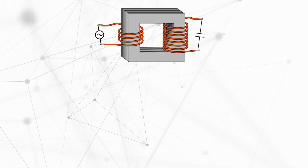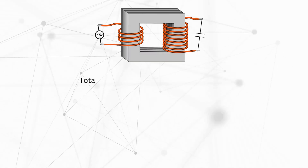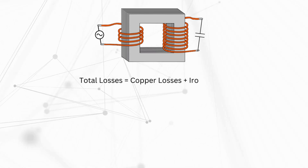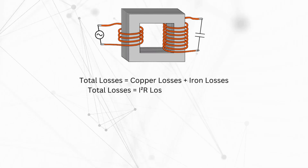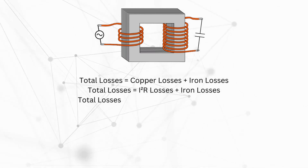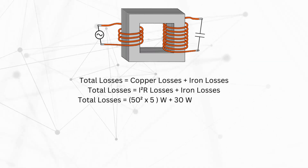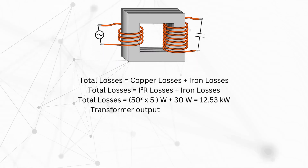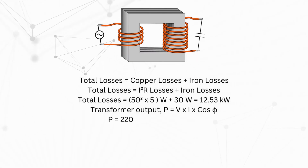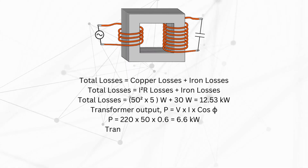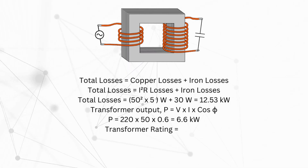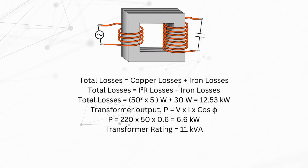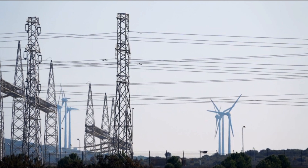In the second scenario, connect a capacitive or inductive load to the secondary of the transformer at power factor cos φ = 0.6. Again, total losses of the transformer would be copper losses plus iron losses — that is I²R losses plus iron losses — putting in the values it becomes 12.53 kW. And the transformer output will be P = V × I × cos φ, which by putting in the values becomes 6.6 kW, while the transformer rating is still 11 kVA.